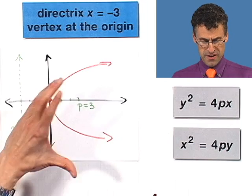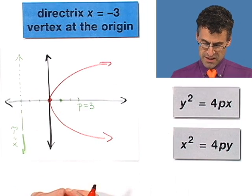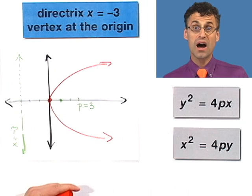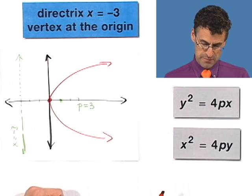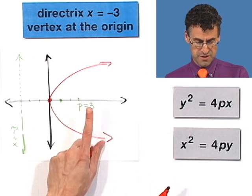That tells me it's a happy face parabola on its side, which means I shouldn't be looking at an x squared equals. I should be looking at a y squared equal. And the p is going to be positive. And in fact, we know exactly what the p is. p is 3.